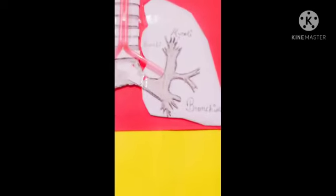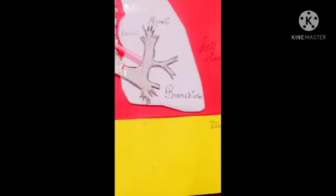As these bronchial tubes pass through the lungs, they divide into smaller passages called bronchioles. At the end of bronchioles, there are tiny balloon-like air sacs called alveoli. These alveoli are surrounded by tiny blood vessels called capillaries.